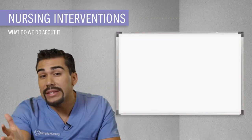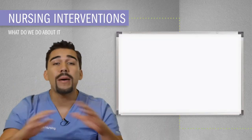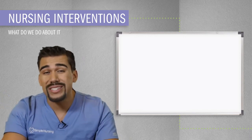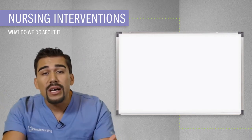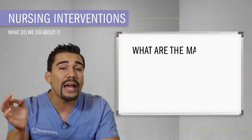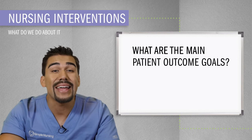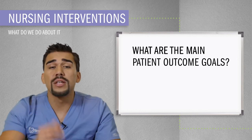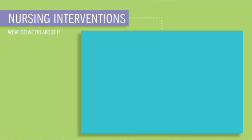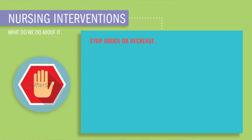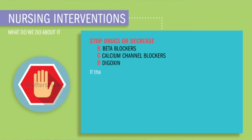So what are we going to do about it? Before we start memorizing all the nursing interventions and treatments, always ask yourself: what is the main goal for the patient? In this case, we want to reset and restore that AV node to normal function. So the first thing we're going to do is remove the causes — stop or decrease the dose of drugs slowing the heart rate: those beta blockers, calcium channel blockers, and digoxin — those negative chronotropic drugs that decrease the heart rate.